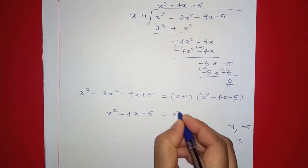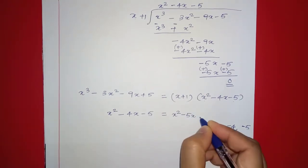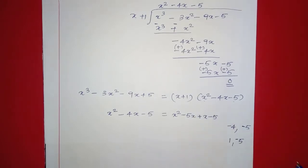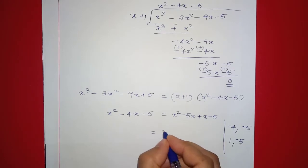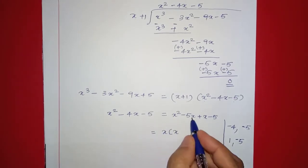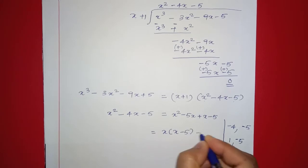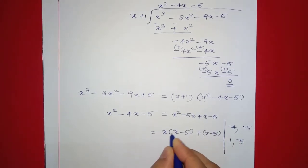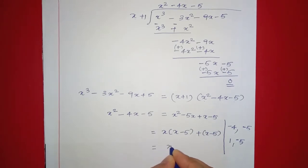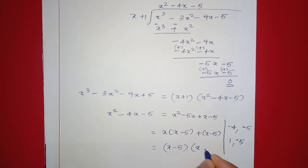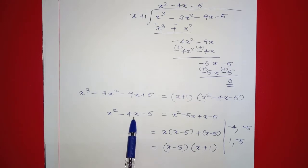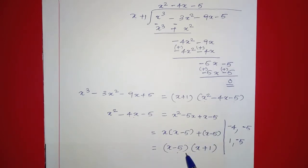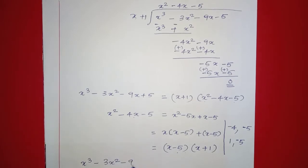So x squared minus 4x minus 5 splits as x squared minus 5x plus x minus 5. That equals x times x minus 5, plus 1 times x minus 5. So x minus 5 is common: x minus 5 into x plus 1. Therefore x raised to 3 minus 3x squared minus 9x minus 5 equals x plus 1 times x minus 5 times x plus 1.